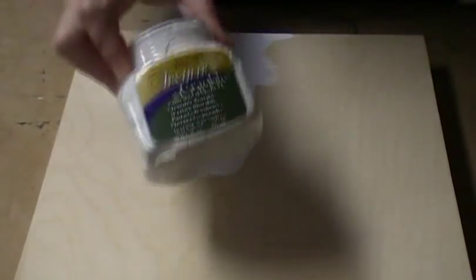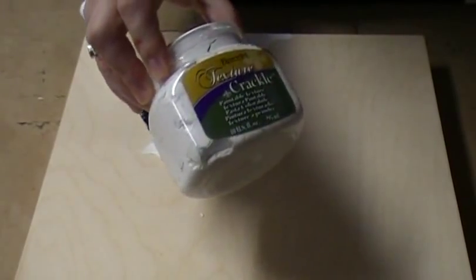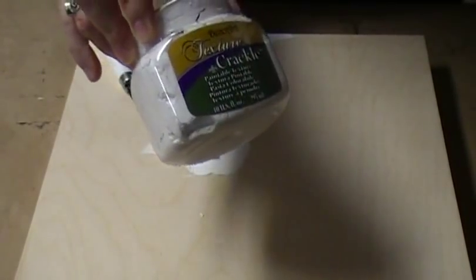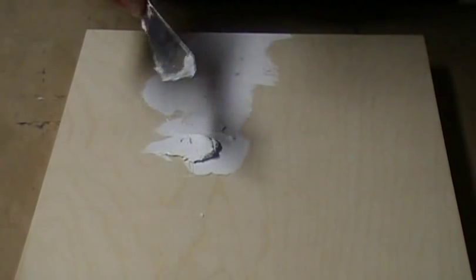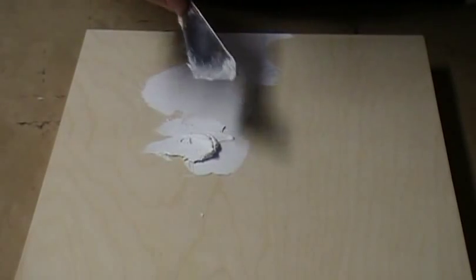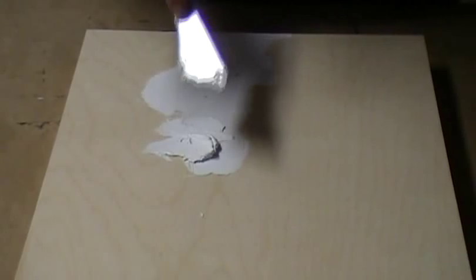This is a really basic application and the idea is to keep it as thin as possible. The product we're using is the Texture Crackle. I'm using the white, this is the paintable version. The thicker you put it on, the more crack you'll get. The thinner you put it on, the less crack you'll get. In this particular case, I don't want to see any cracking or any significant cracking, so the application is going to be very thin.